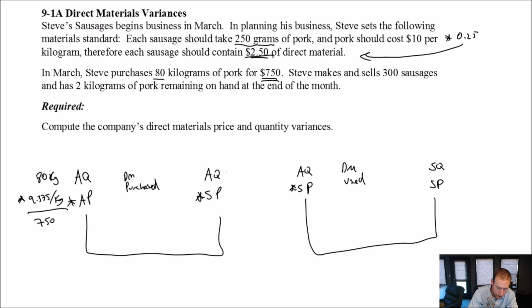So 80 times 9.375 is $750. And this prong is just like, what did Steve pay for pork? And he paid $750 for the pork he purchased. AQ times SP. Well, okay. The AQ remains 80. The standard price per kilogram? Not the standard price per sausage, right? The standard price per sausage is $2.50 in terms of how much material he thinks is going in. But the price per kilogram is $10. So 80 times 10 is 800. We have enough for a variance here, right? We have enough information. 80 kilograms, 10 bucks per kilogram gives us $800. 750. Well, there's a difference here. And the difference between the 750 and 800 is 50.